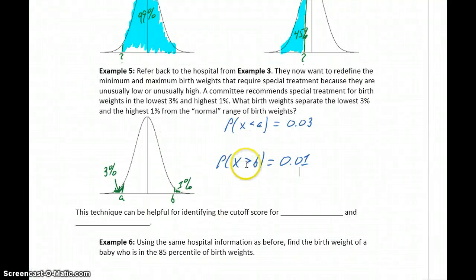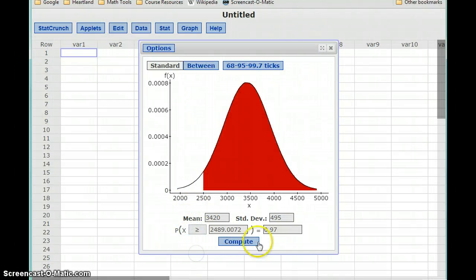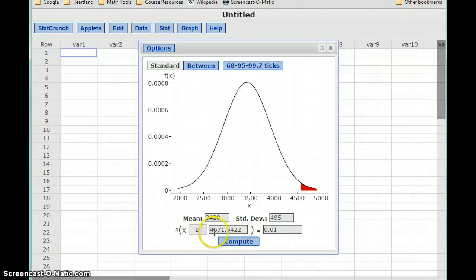The other result that we want is for X to be larger than some number, and that probability to be 0.01, so we can change this to be a greater than statement, and update our probability to be 0.01. Click Compute, and we get 4,571.5.